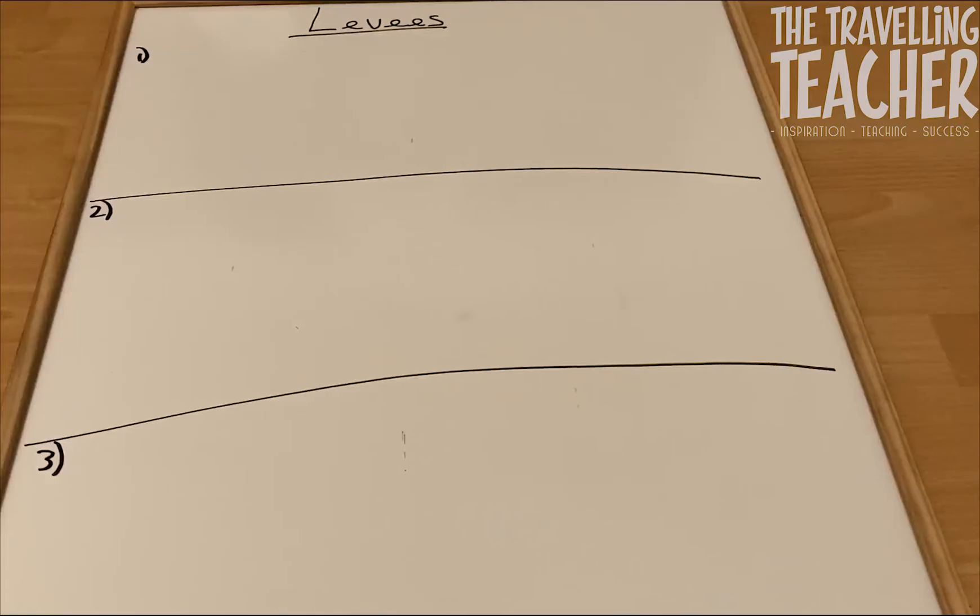Hi everyone and welcome to this really quick GCSE revision video looking at how levees are created. Now firstly, what is a levee? A levee is a natural raised riverbank which is formed by two processes: the process of flooding and secondly, the process of deposition. So let's dive straight in and look at diagram one.